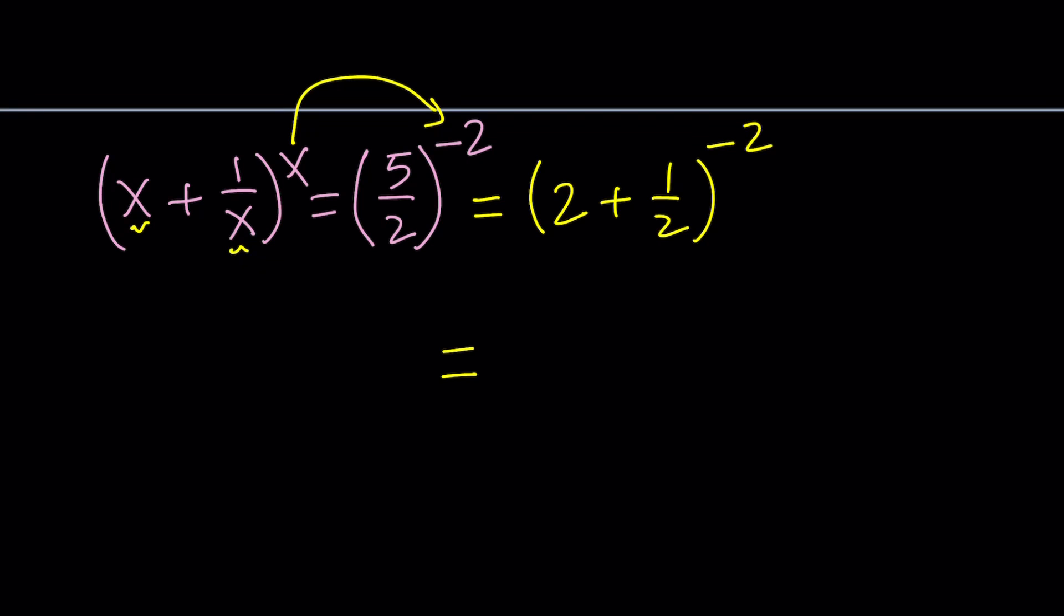5 halves to the power of negative 2 is also negative 5 halves to the power of negative 2, because when you raise a negative number to an even power, you get a positive number. Of course, we're talking about even integers here. Something like negative 2 thirds would be totally different.